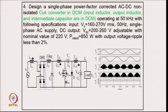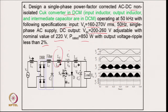Example 4: design a single phase power factor corrected AC-DC non-isolated Cuk converter operating in discontinuous conduction mode at 50 kHz. Supply voltage variation is 160 to 270 V at 50 Hz; output voltage is adjustable from 200 to 260 V with a nominal of 220 V; power output is 850 W with less than 2 percent output voltage ripple. In DCM all three reactive elements can operate in discontinuous mode, giving up to 8 possible design combinations — the all-CCM case was covered in Example 3.